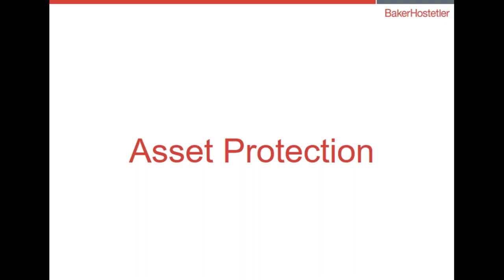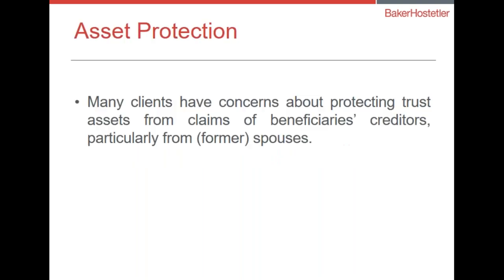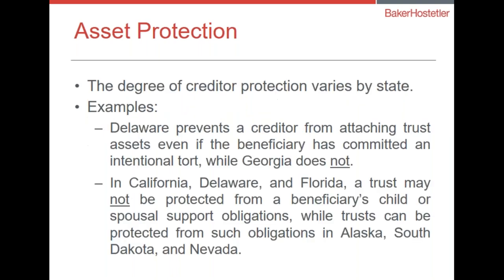Another area of interest is asset protection. When creating a trust, why wouldn't you want it to be protected if you can? Many clients have concerns about protecting trust assets from claims of the beneficiary's creditors, particularly from spouses or future former spouses. This is another area where the rules vary by state. Delaware prevents a creditor from attaching trust assets even if the beneficiary committed an intentional tort, while Georgia does not. California, Delaware, and Florida do not protect against child or spousal support obligations, but trusts can be protected from these in Alaska, South Dakota, and Nevada. South Dakota in particular has been on the forefront of trying to attract trust business.